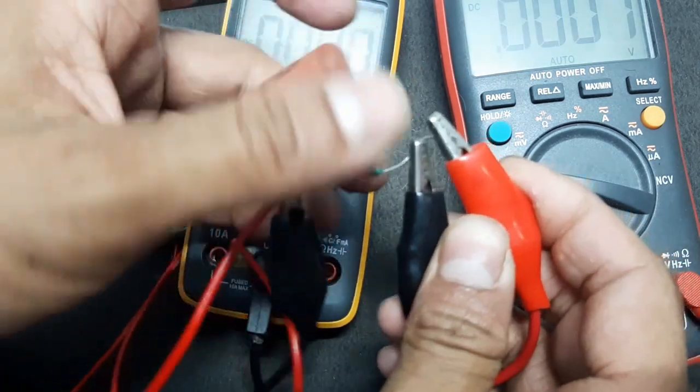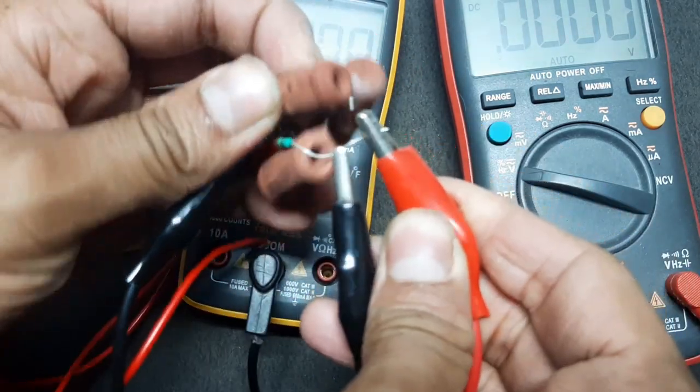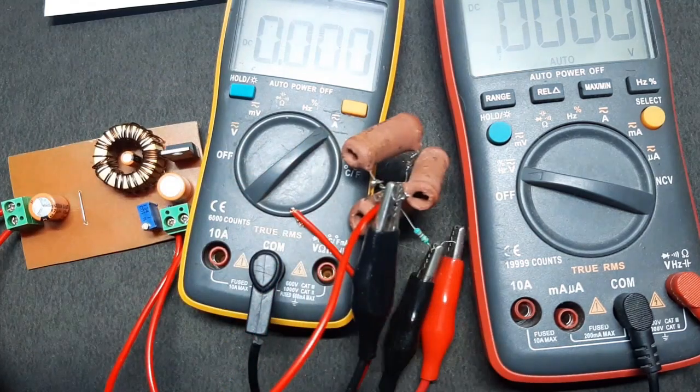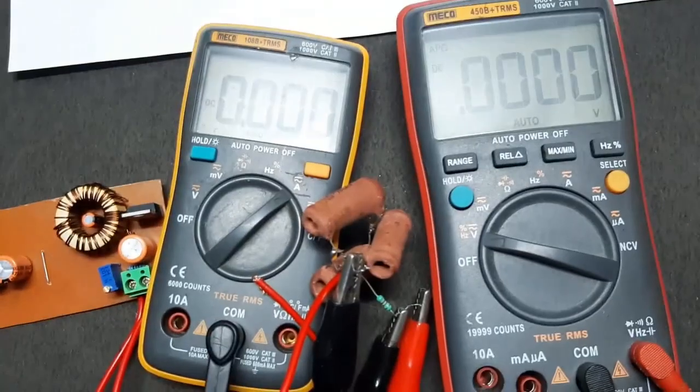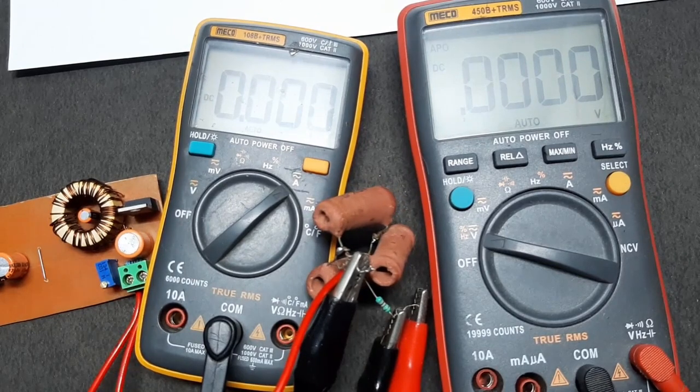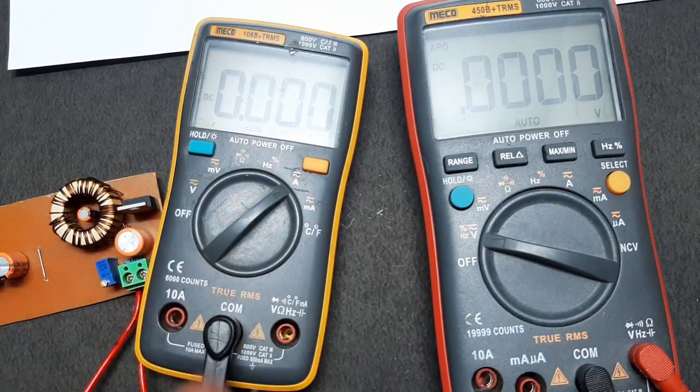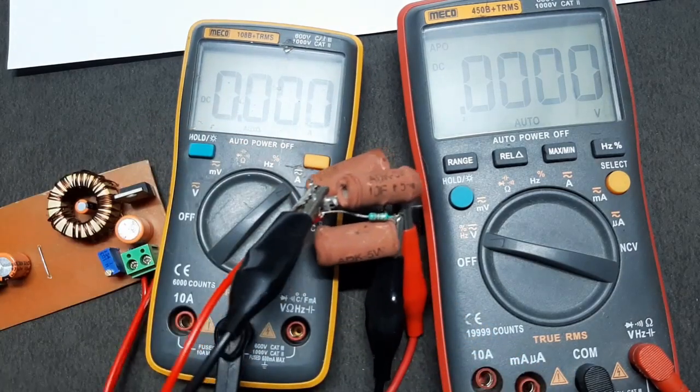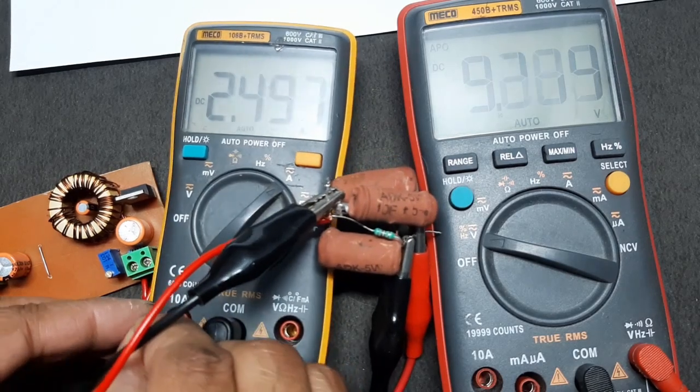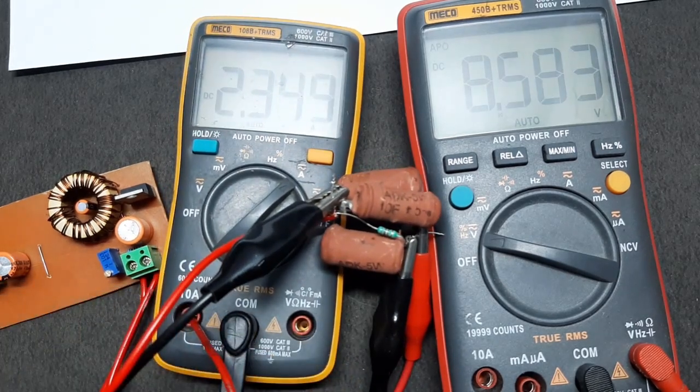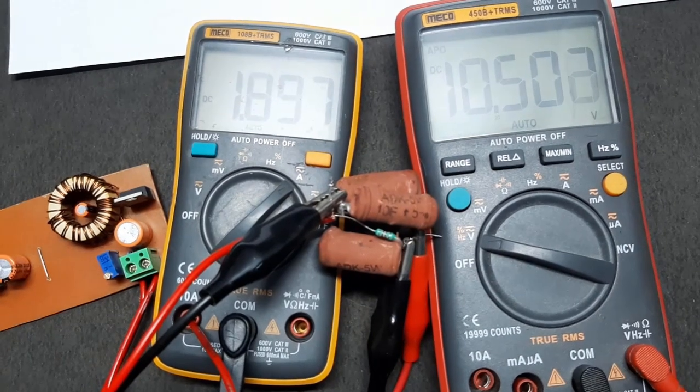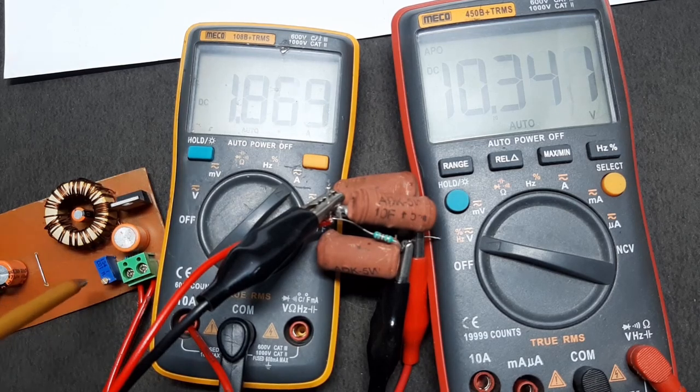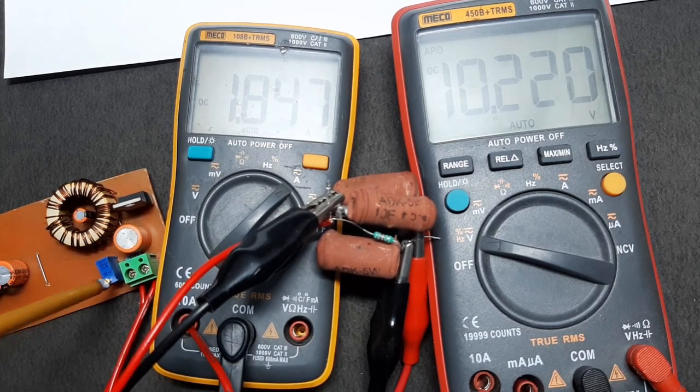As you can see, the voltage instantly dropped. I think I may have already broke the circuit, or no, I didn't break it. One wire came out. As you can see, the current is around 1.5 amps or more, and the output voltage is 10 volts. Let's see how far I can push it before it dies.